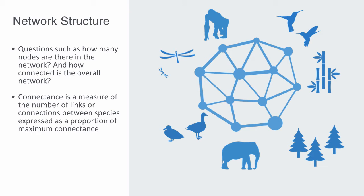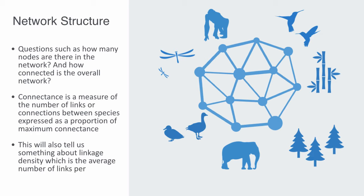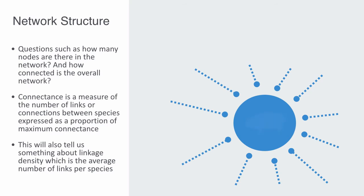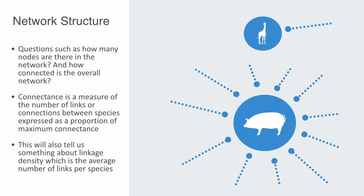Connectance also tells us something about linkage density, which is the average number of links per species. For any given creature, their degree can define how much of a generalist or specialist the species is within the food web, both in its role as a consumer and as a resource.